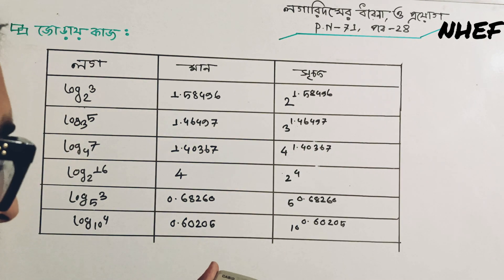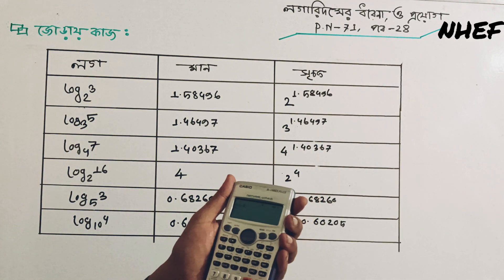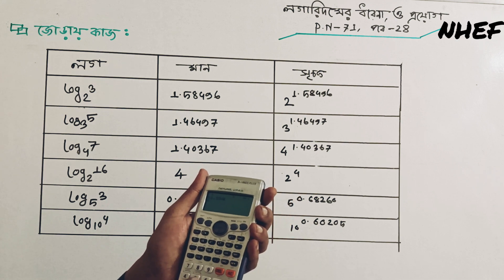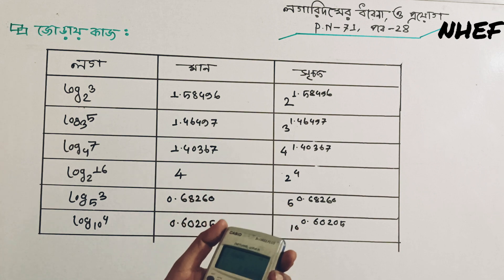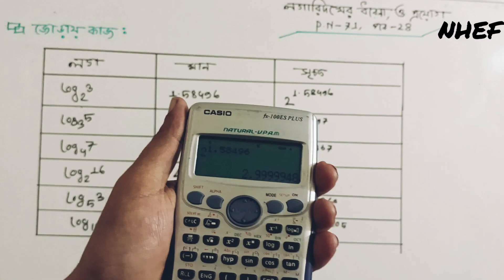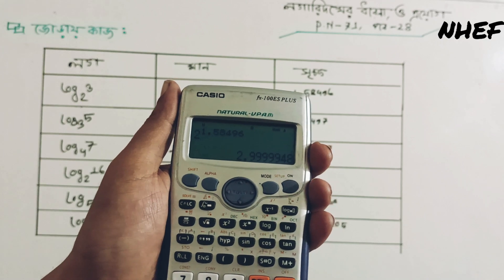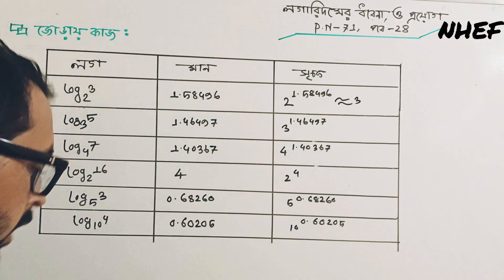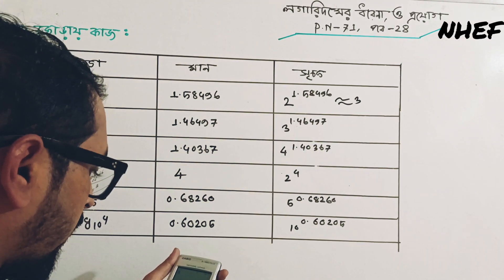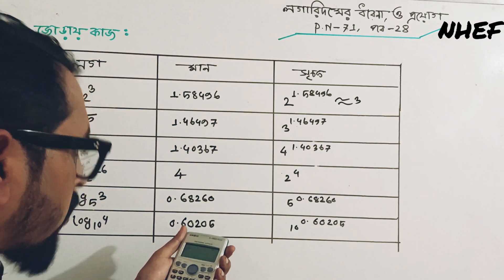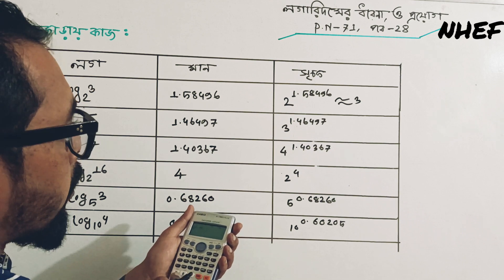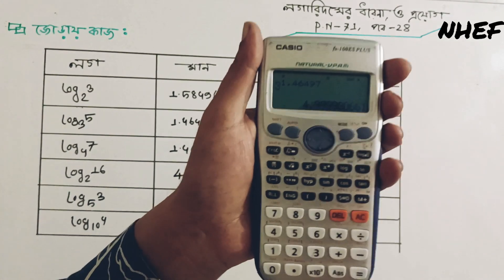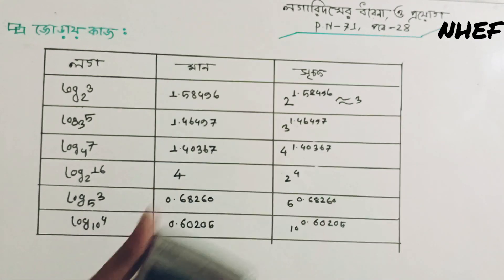Let's see: 2 to the power 1.58496 is equal to — you can see 2 to the power, or 2 to the power, is 9.999. You can see the price of 3. For the price of 3, that is the same category: 3 to the power 1.46497 is equal to 4 to the power is 9.999. That is 5.